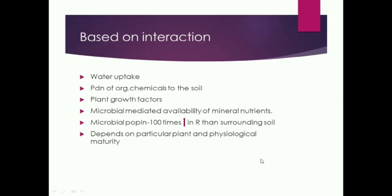Carbohydrate exudates and mucilaginous materials from the roots help the growth of a large population of microbes. When the plant matures, some of them get autolyzed during their normal growth. This property will provoke the growth of a particular organism, e.g. Pseudomonas. And later, when the plant dies, the R/S ratio will also decrease.